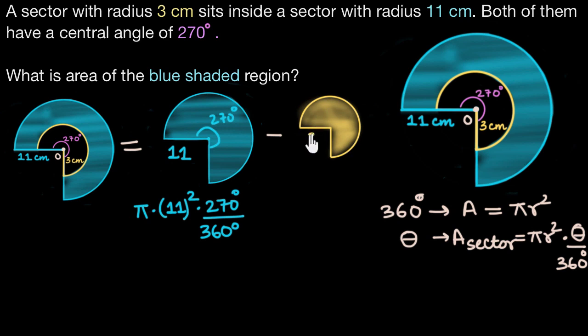Now the radius of this sector is 3 centimeters so its area will be π r squared. Here r is 3 so π times 3 squared times the angle it makes at the center which here is 270 degrees again, so π times 3 squared times 270 degrees divided by the total angles in a circle which is 360. Let me put a minus sign over here.